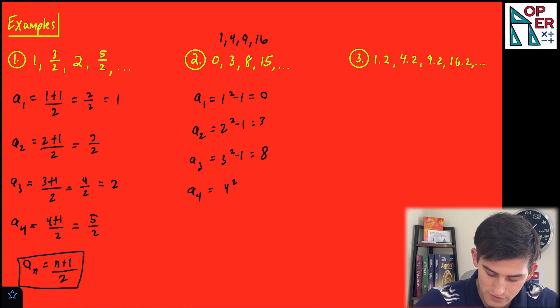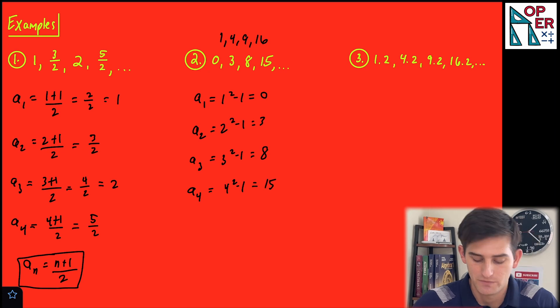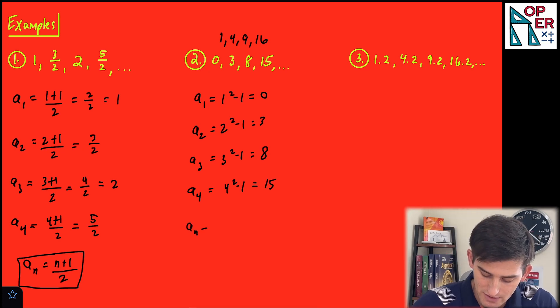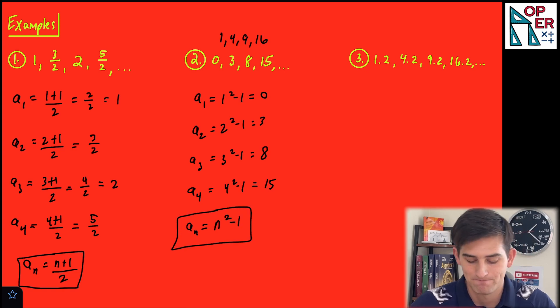And lastly, 4 squared minus 1, so that would be 15. So there's our pattern. So now we could write it as a sub n equals n squared minus 1 for number 2.